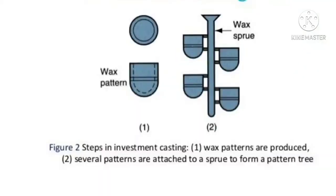The second step is mounting the wax pattern like a tree. We mount 4 to 5 wax patterns on a rod, resembling a tree structure, in which the patterns are like branches and the rod is like a stem in the middle.